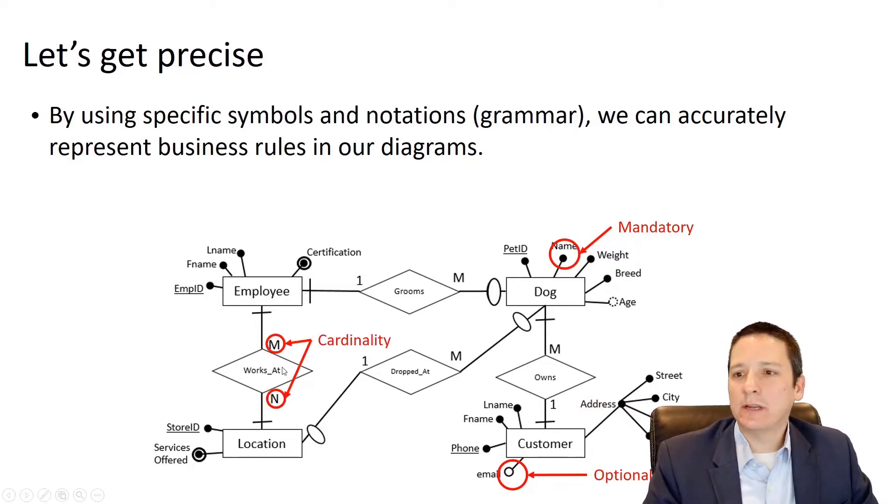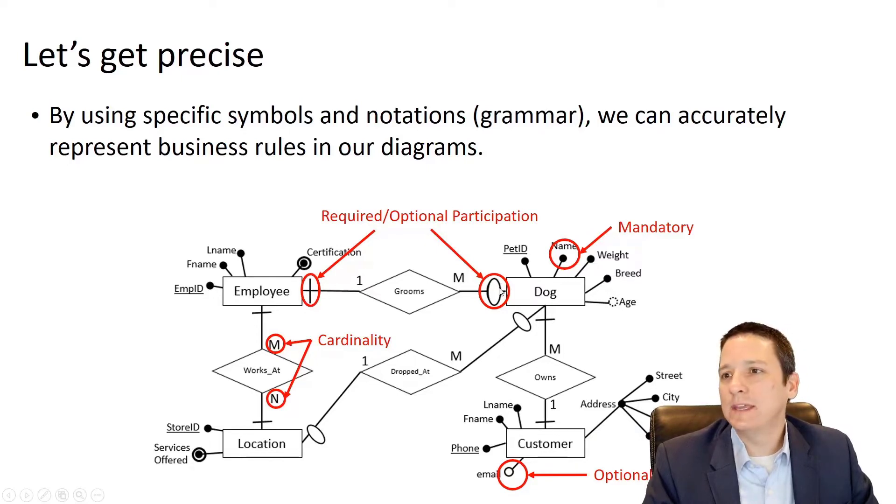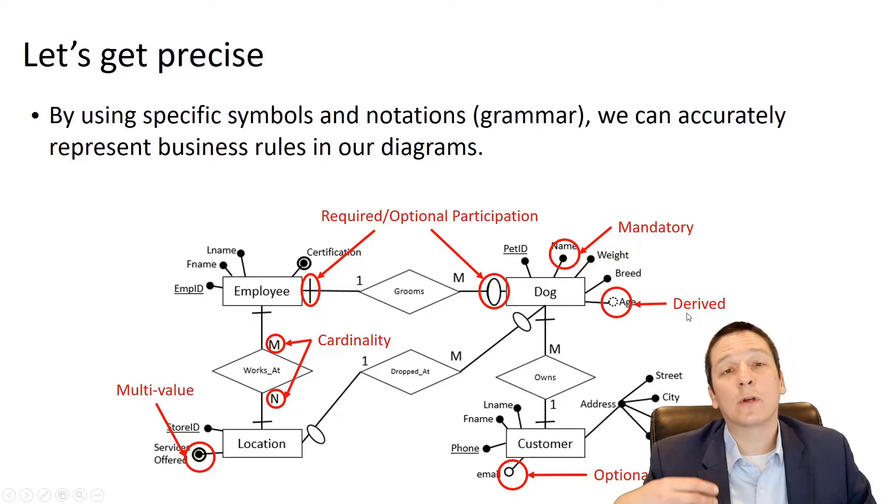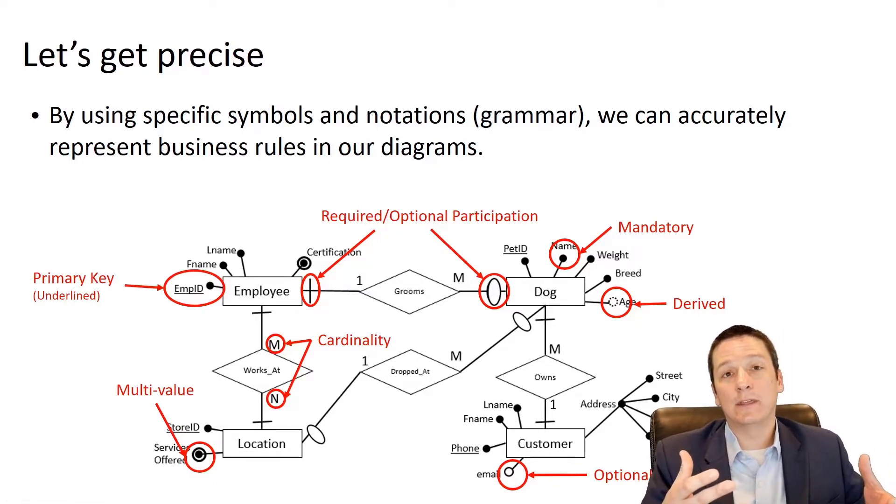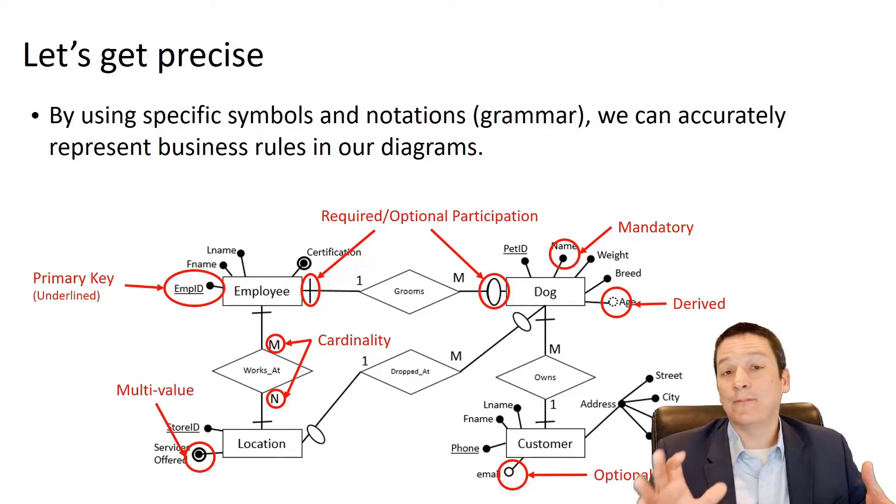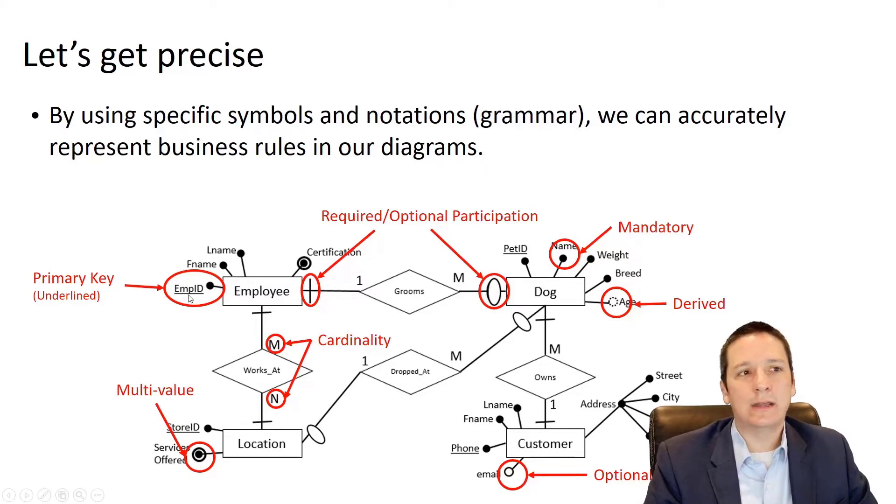These ones and Ms and Ns that are on either side of our relationship diamond represent the cardinality. And we're going to talk more about what these words mean throughout the rest of class. These dashes and circles that are nearer to the entities indicate whether participation in the relationship is required or optional for either entity. If we have a dot that is circled, that means we can have multiple values for that attribute. If the dot has dotted lines, it means that is a derived or calculated attribute. So instead of storing it, we calculate that based on some other attribute. And then our primary key, which is going to be our unique identifier for the entity. And we indicate that by underlining the name of the attribute.